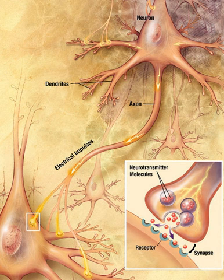Chemical synapses are biological junctions through which neuron signals can be exchanged with each other and with non-neuronal cells such as those in muscles or glands. Chemical synapses allow neurons to form circuits within the central nervous system. They are crucial to the biological computations that underlie perception and thought, and allow the nervous system to connect to and control other systems of the body.